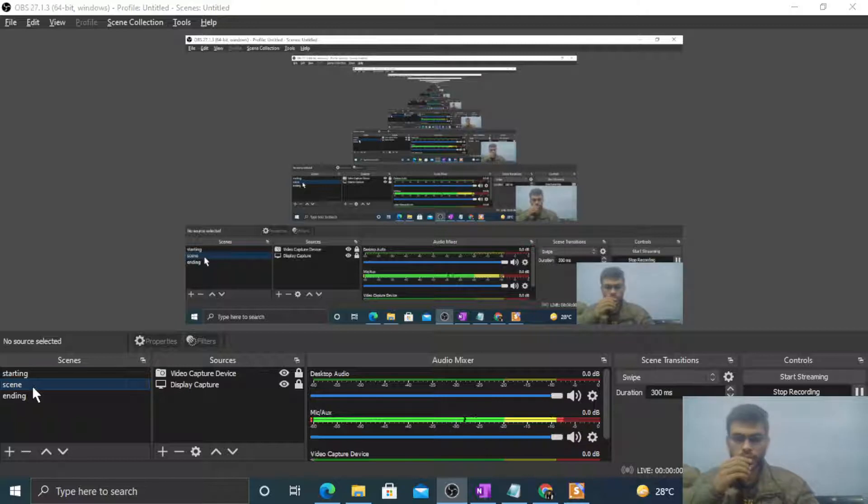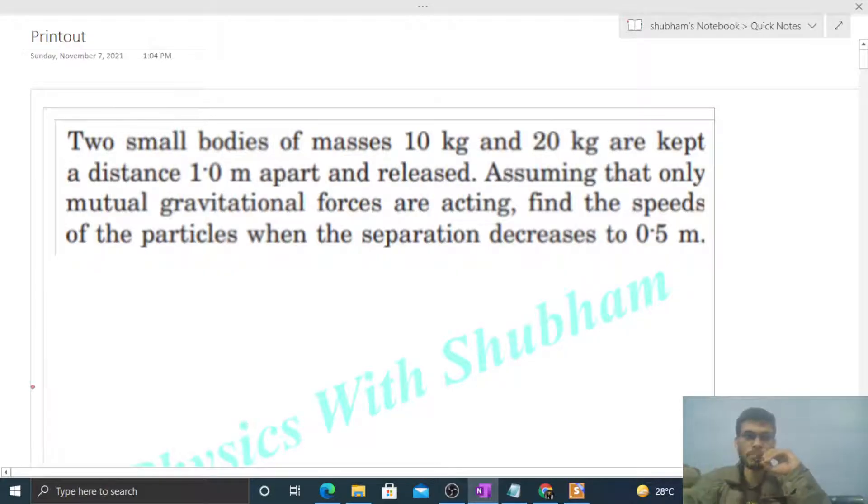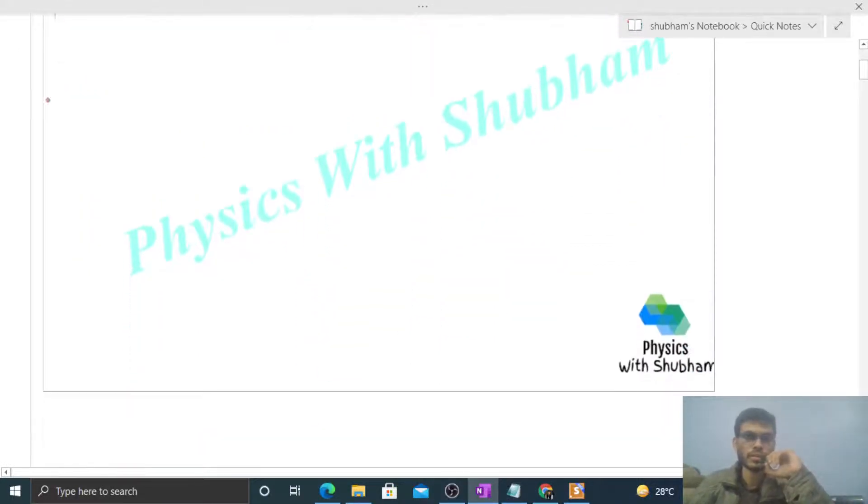Okay, hi everyone. So today let's discuss this interesting problem. It says two small bodies of masses 10 kilograms and 20 kilograms are kept at a distance 1 meter apart and released. Assuming that only mutual gravitational forces are acting, find the speeds of the particles when the separation decreases to 0.5 meter.